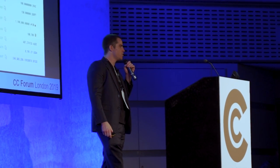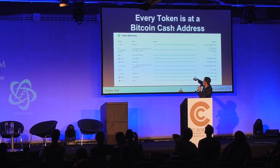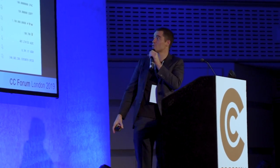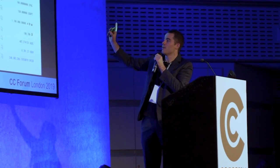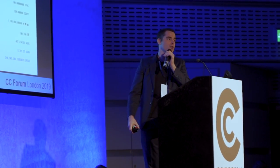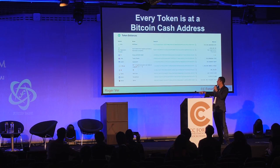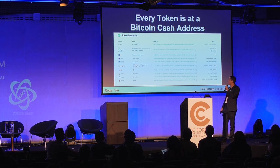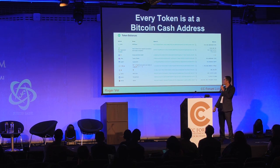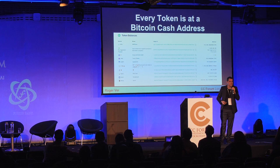Every one of these tokens just sits at a Bitcoin Cash address. You can see on screen the token ID in the middle, and on the left are all the different token names and symbols. People are making all sorts of tokens — a Tupac Shakur token, a sugar point token, a non-aggression principle token. All of these exist right now, today. No registration required — you can make your own token in 30 seconds, or in 10 seconds if you know what you're doing.